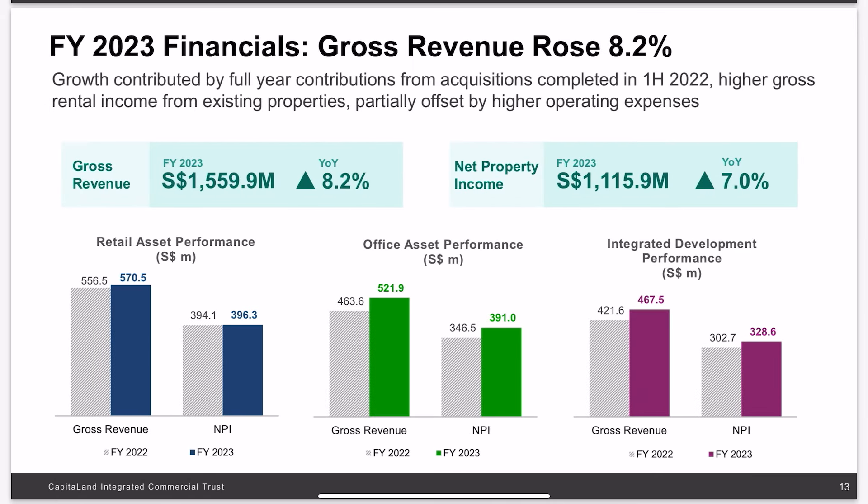Looking at their revenue and net property income, performance is impressive with increases across the board — 8.2 percent higher revenue and 7 percent higher net property income. These results again emphasize how good CICT's performance is, with year-over-year dividends increasing from 10.58 cents to 10.75 cents. This means the increase in net property income is faster than the increase in their cost of debt expenses, which shows how well management is handling finances in this high interest rate environment.